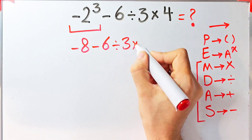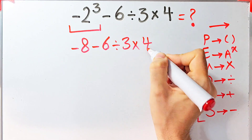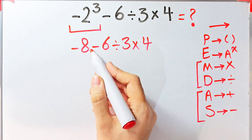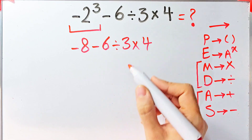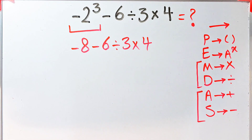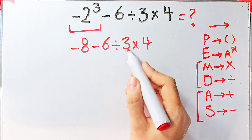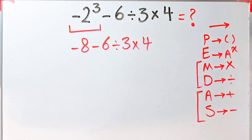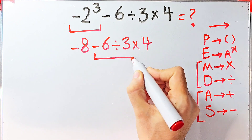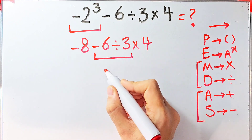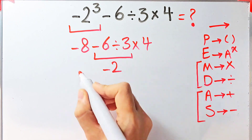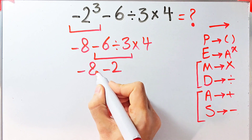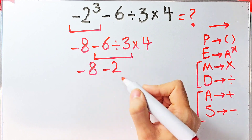In this step we have subtraction, division, and multiplication. First we simplify the division: negative six divided by three equals negative two. Now the question becomes negative eight minus two, then times four.